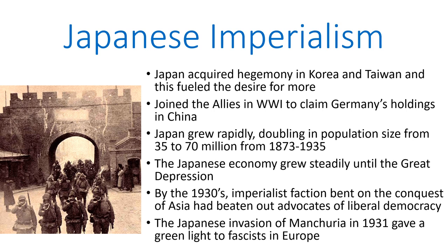By the 1930s, what we see is that a liberal democratic faction got beaten out by an imperialist faction which was bent on the conquest of Asia. This imperialist faction was both modernist in its outlook but also maintained the kind of samurai warrior mentality, and this would become increasingly dominant as the war in the east went on. In 1931, the Japanese began what was World War II for them ultimately by invading Manchuria. When Japan invaded Manchuria and the League of Nations did nothing, Japan actually ended up leaving when Britain and France protested. This gave a green light to fascists in Europe who dreamt of conquest at the expense of their neighbors.